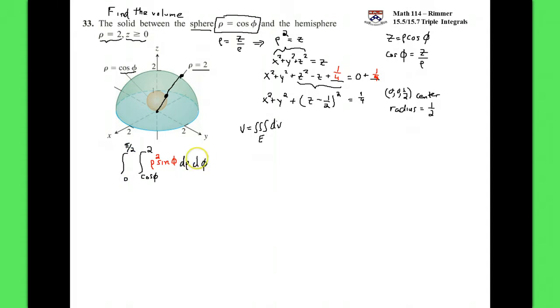The θ bound is that we take, θ is the positive angle that we swing from the positive x-axis, and so θ will be zero all the way to 2π. And that's going to be our volume.